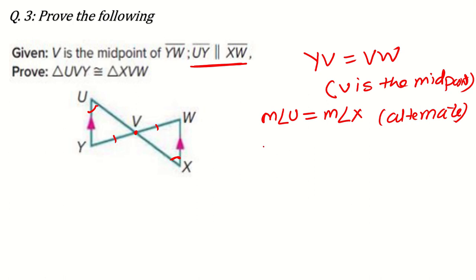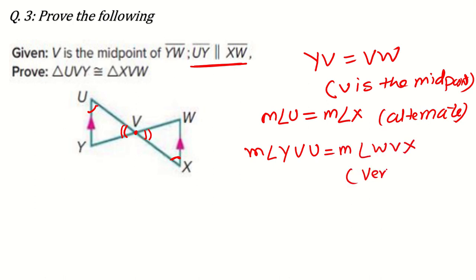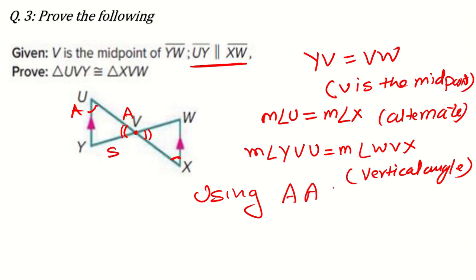Measure of angle YVU will be equal to measure of angle WVX — because of vertical angles. So, using AAS criteria, triangle UVY is congruent to triangle XVW. Like this, you can finish this question as well.